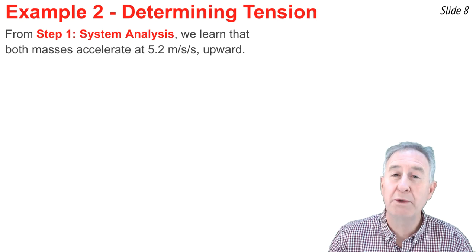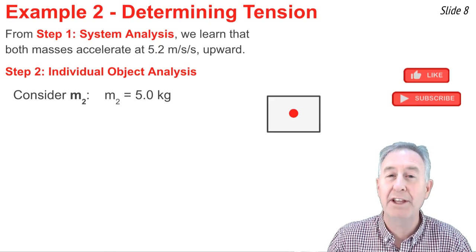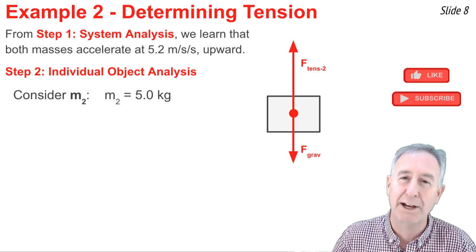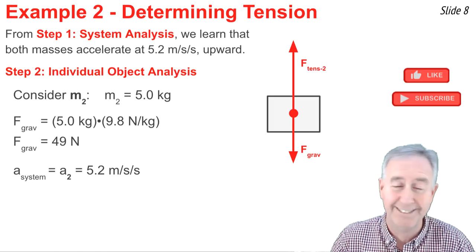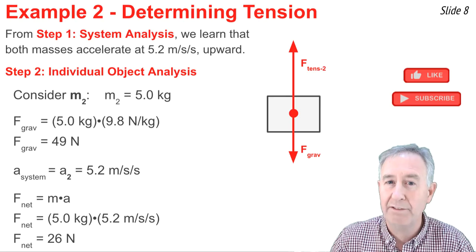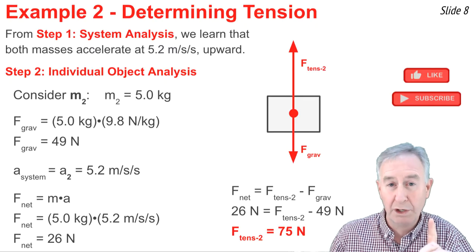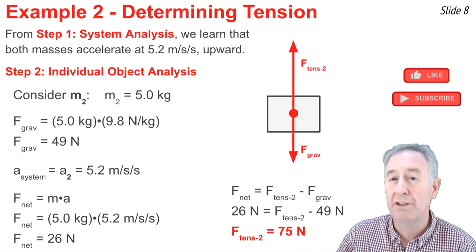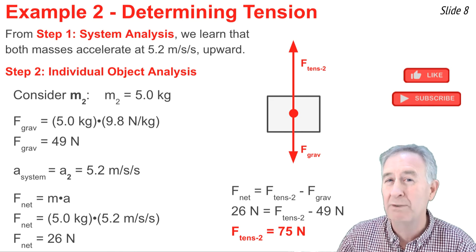Now I use an individual object analysis to find tension in rope two. I pick object two — the 5 kilogram mass — since only one rope is attached to it. The free body diagram shows gravity downward and tension in rope two pulling upward. F-grav on 5 kilograms equals 49 Newtons. Since acceleration is 5.2 meters per second squared, F-net equals 5 times 5.2 equals 26 Newtons upward. F-net equals tension minus gravity: 26 equals tension minus 49. Adding 49 to both sides gives 75 Newtons for the tension in rope two.